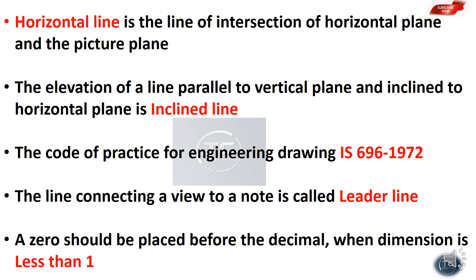The horizontal line is the line of intersection of the horizontal plane and the picture plane. The elevation of a line parallel to the vertical plane and inclined to the horizontal plane is an inclined line.